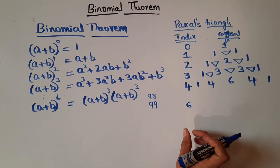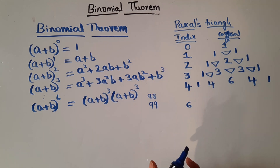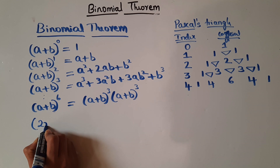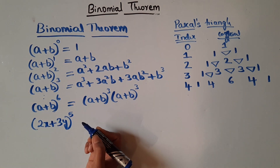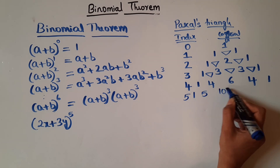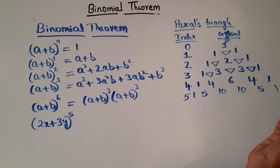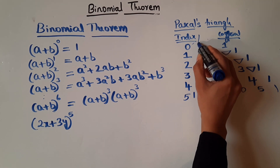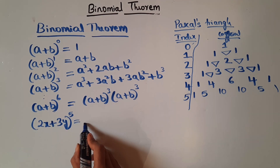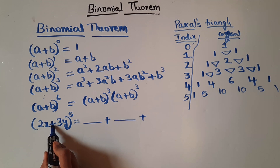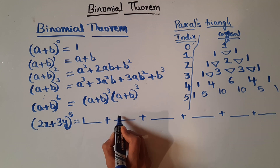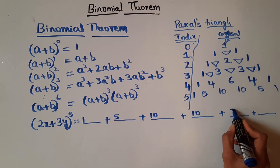Before introducing combinations, let me give an example using these observations for a small index. We have the binomial expression (2x + 3y) to the power 5. The index is 5, so there are 6 terms with coefficients 1, 5, 10, 10, 5, 1. Here A = 2x and B = 3y. So the terms are: 1·(2x)⁵, 5·(2x)⁴·(3y), 10·(2x)³·(3y)², 10·(2x)²·(3y)³, 5·(2x)·(3y)⁴, and 1·(3y)⁵.